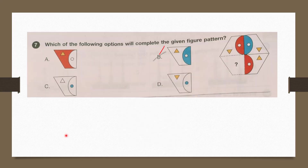Question number 7: Which of the following options will complete the given figure pattern? Here you can see red, then blue, then red — so it will be blue. And we have blue here. So our answer is option B.